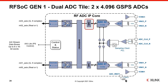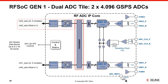Each RF data path includes a QMC — quadrature modulation correction — block that can be programmed to correct mismatches in DC offset, gain, or phase resulting from the use of external IQ mixers. The crossbar block adds tremendous flexibility to signal routing within an RF tile. For example, when receiving a multiband signal from a single antenna with two bands of interest, the RFSOC's large input bandwidth and direct RF sampling allow us to capture the signal with a single ADC, then route it to both complex mixers to independently downconvert each band.